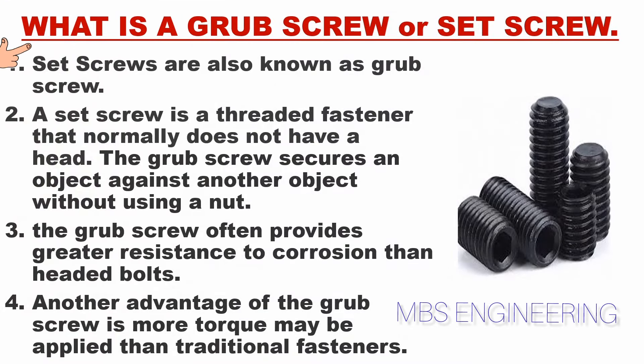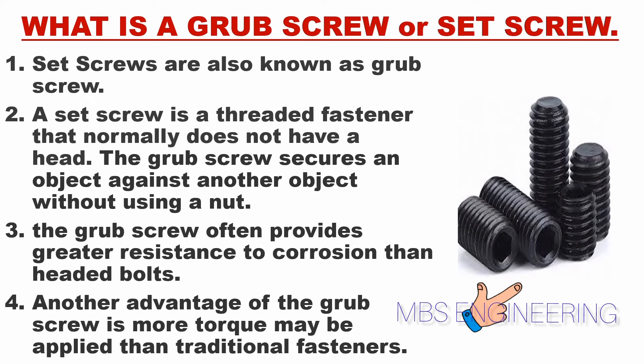We will understand about the grub screw or set screw. Set screws are also known as grub screws. A set screw is a threaded fastener that normally does not have a head. The grub screw secures an object against another object without using a nut. The grub screw often provides greater resistance to corrosion than headed bolts, and more torque may be applied than with traditional fasteners. Please refer to the picture of the grub screws or set screws for better understanding.